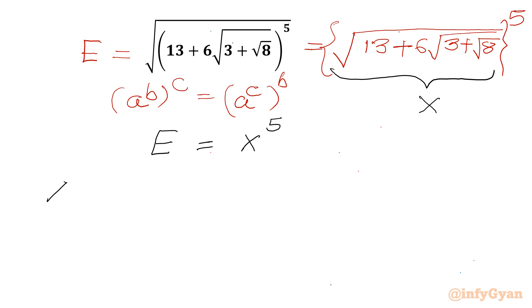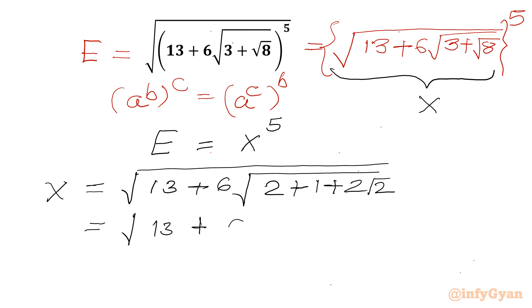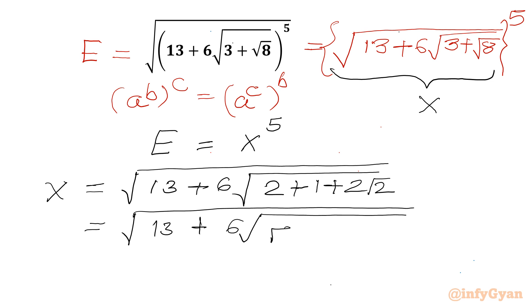Let us simplify x separately. So x equals the square root of 13 plus 6 times square root of 3. I will write 3 as 2 plus 1, and root 8 is 2 root 2. Now we can write: square root of 13 plus 6 times — where root 2 can be written as (√2)², 1 can be written as 1², and this middle term is 2 times root 2 times 1.